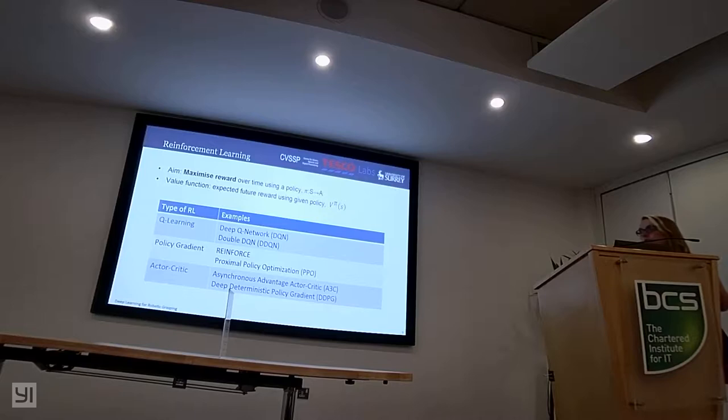One of the very popular ones of these would be asynchronous advantage actor-critic methods, which uses a neural network which has shared weights, one which predicts the action, so it's our policy, and one which predicts the value. And then uses the advantage, which tells us how much better or worse we've performed than expected, in our update.